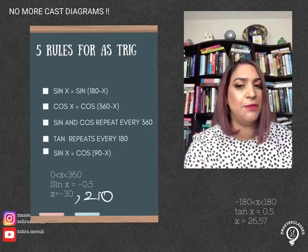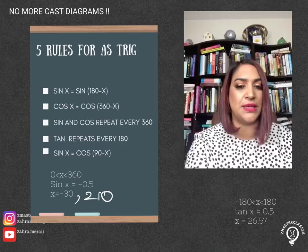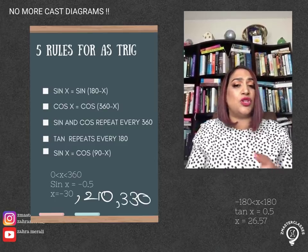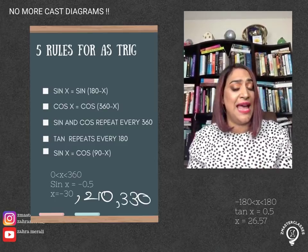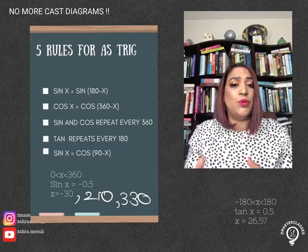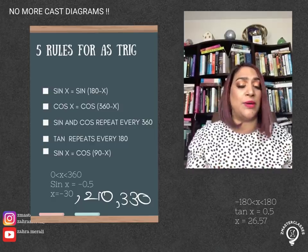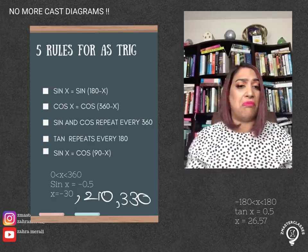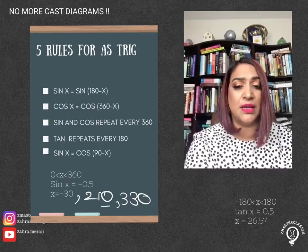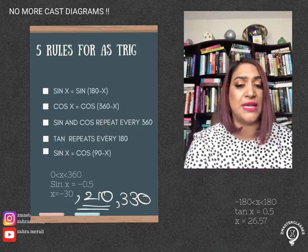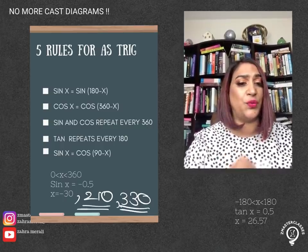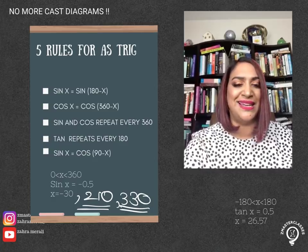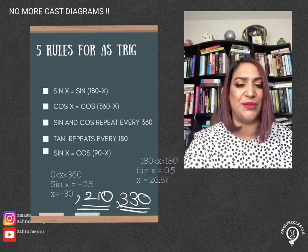So once we have those two numbers, we can just keep adding and subtracting 360. Minus 30 plus 360 is going to give me 330. If I do that to 210, the problem is it's going to go past my range, so I don't need it. That's it — I have my answers: 210 and 330. No cast diagrams needed.